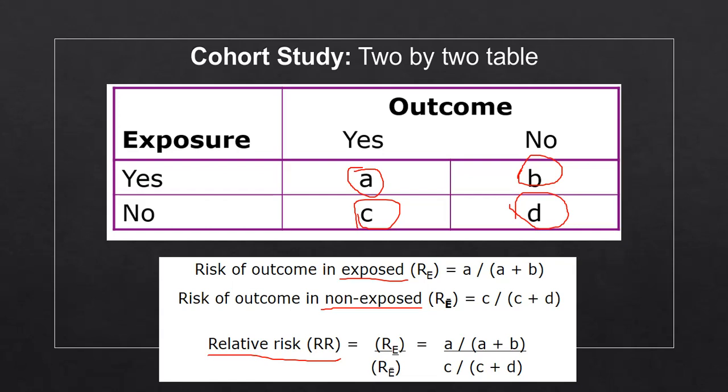And also note that this right here, what we've done is essentially made this a percentage, right? You have A divided by the total population that's over here, not the total population of the study, just the total number of people in this yes-exposed group. So this is essentially a percentage.